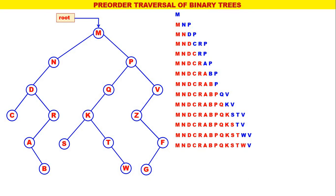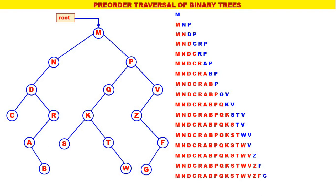Now the leftmost is V — the pre-order for V is V, Z with V processed. Therefore V is replaced by V, Z with V processed. Leftmost is Z — the pre-order for Z is Z, F with Z processed. Therefore Z is replaced by Z, F with Z processed. Next leftmost is F — the pre-order for F is F, G with F processed. Therefore F is replaced by F, G with F processed. Next leftmost is G — the pre-order for G is G only with G processed.